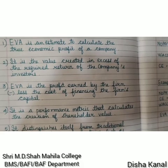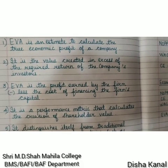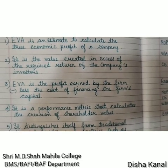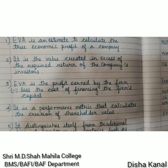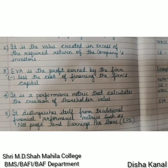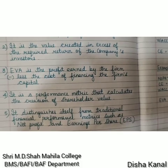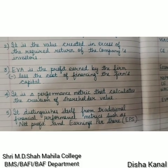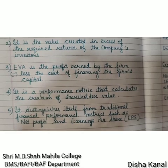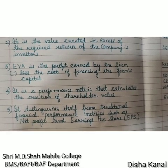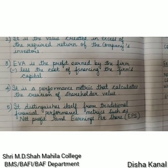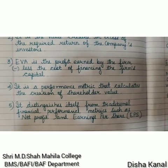Fourth, EVA is a performance metric that calculates the creation of shareholder value — it helps investors see and calculate the creation of shareholder wealth. Fifth, EVA distinguishes itself from traditional financial performance metrics. Previously, we would assess a company's performance by looking at its P&L, net profit figure, and EPS. But now we have a better way of calculating the firm's value in the form of EVA.